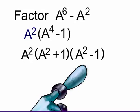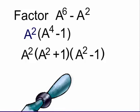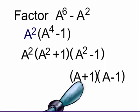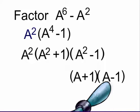a squared minus one is a difference of two squares, so it can be factored into a plus one times a minus one.